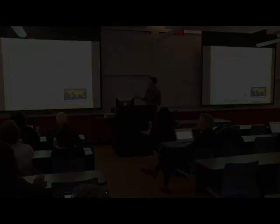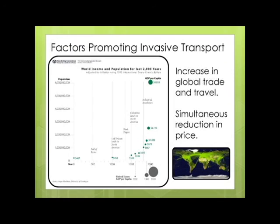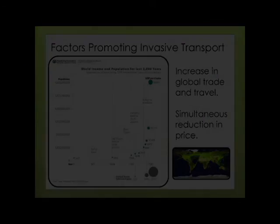This is a pretty well-known chart showing population increase over the last 2,000 years — an exponential increase. Even 500 years ago we had less than half a billion people in the world, and now we're over 7 billion. What's interesting is we're also seeing the associated average GDP per person. So not only do we have ever more people, but they're also richer. They have more resources. This has led to an explosion in global trade and travel.